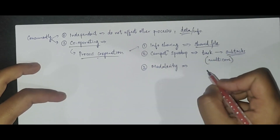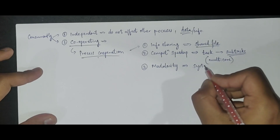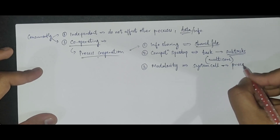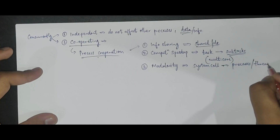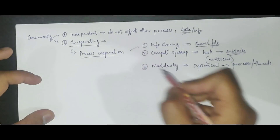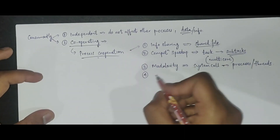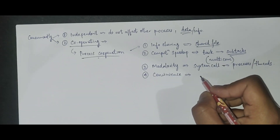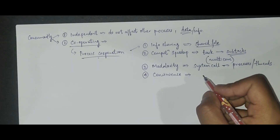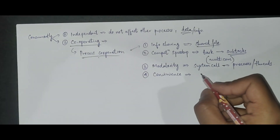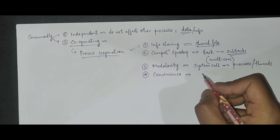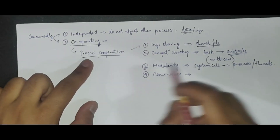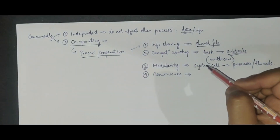Another case is modularity — for example, if we want a modular system, we can divide system calls into separate processes or threads and run them concurrently, which again requires cooperation among them. One more case is convenience: a single user may want to do multiple tasks at the same time, like listening to music while compiling code, so all those tasks run concurrently and process cooperation is needed.